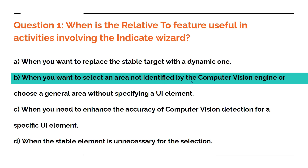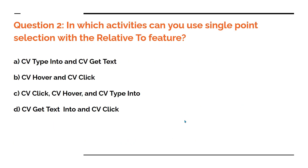So here the right answer is B: when you want to select an area not identified by the computer vision engine, or to choose a general area without specifying a UI element. If you go through that paragraph, you will find this as your right answer. Let me go through the second question: in which activities can you use single point selection with the relative to feature? So there are two different areas — one is single point selection, the other one is area selection.